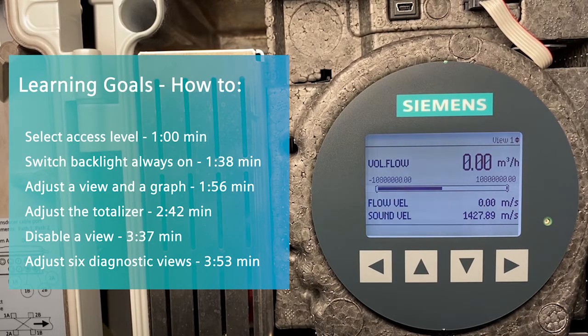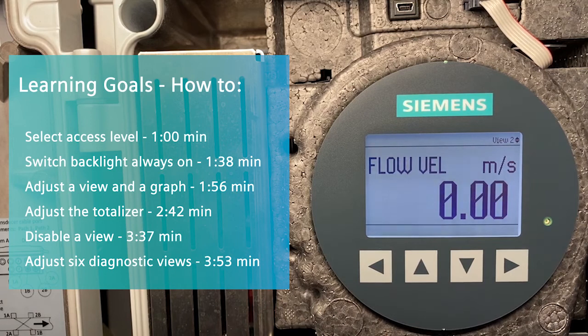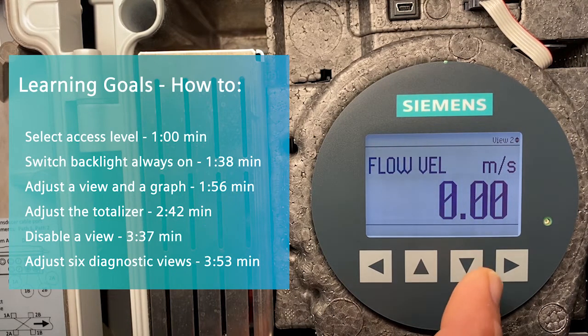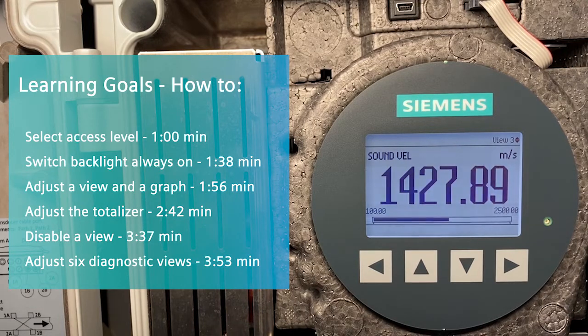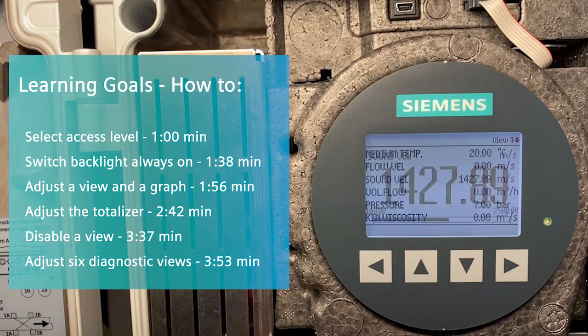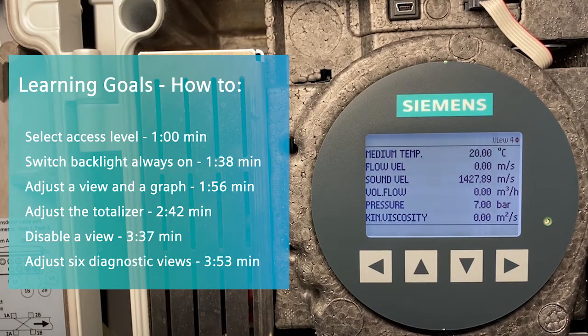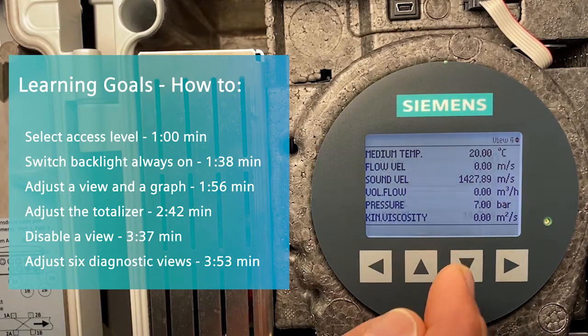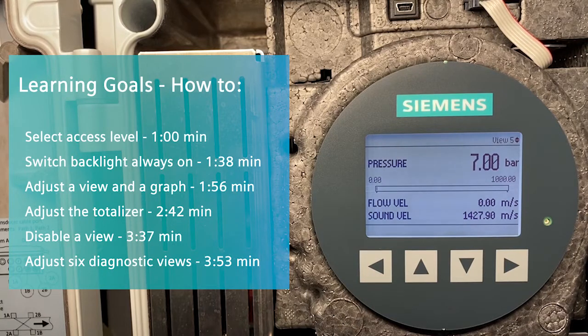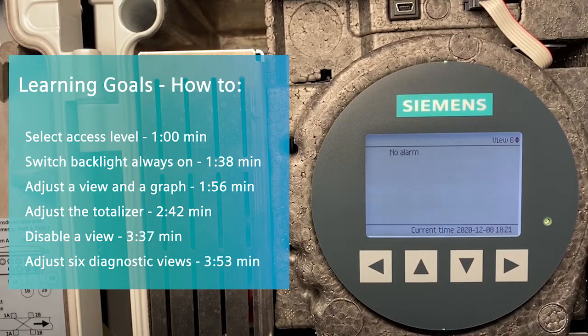View 1: I want flow value and a graph of the flow. View 2: I want a totalizer value of the flow. View 3: I want to deactivate. View 4: I want to keep. View 5: I want to show six diagnostic values. View 6: No changes.